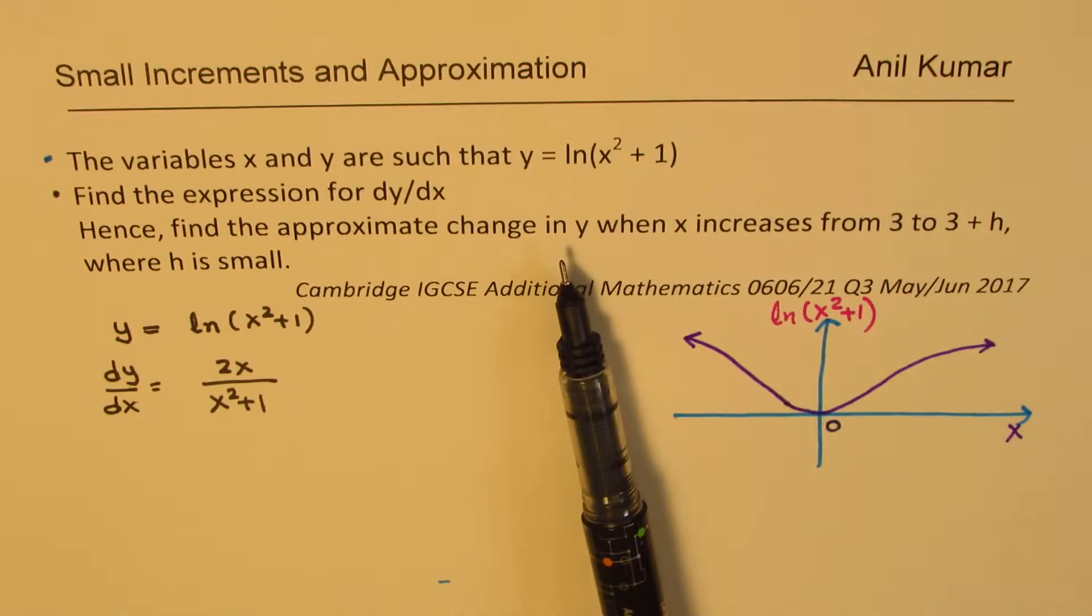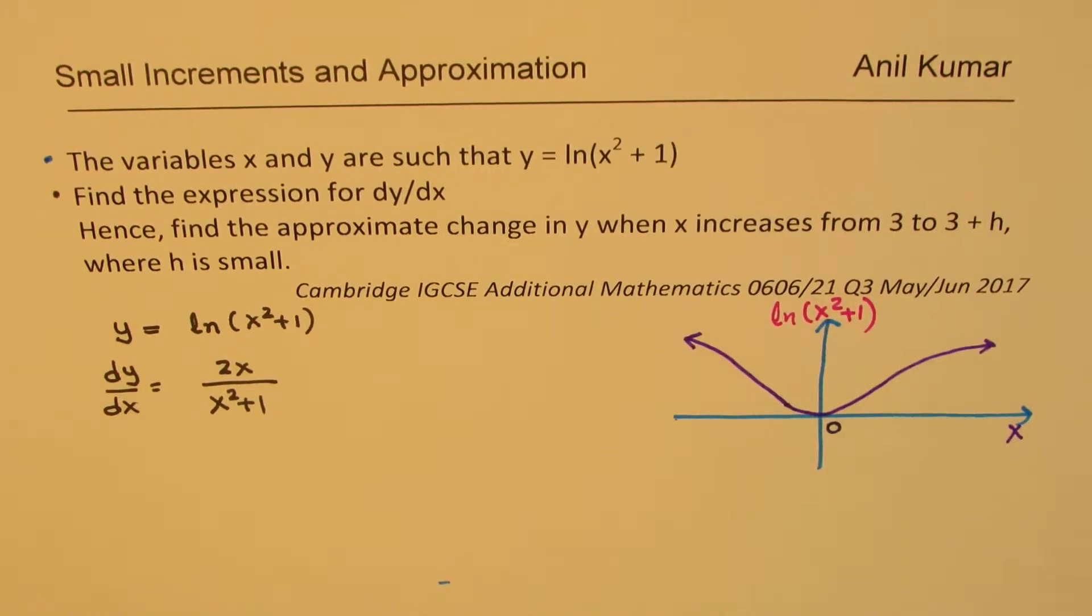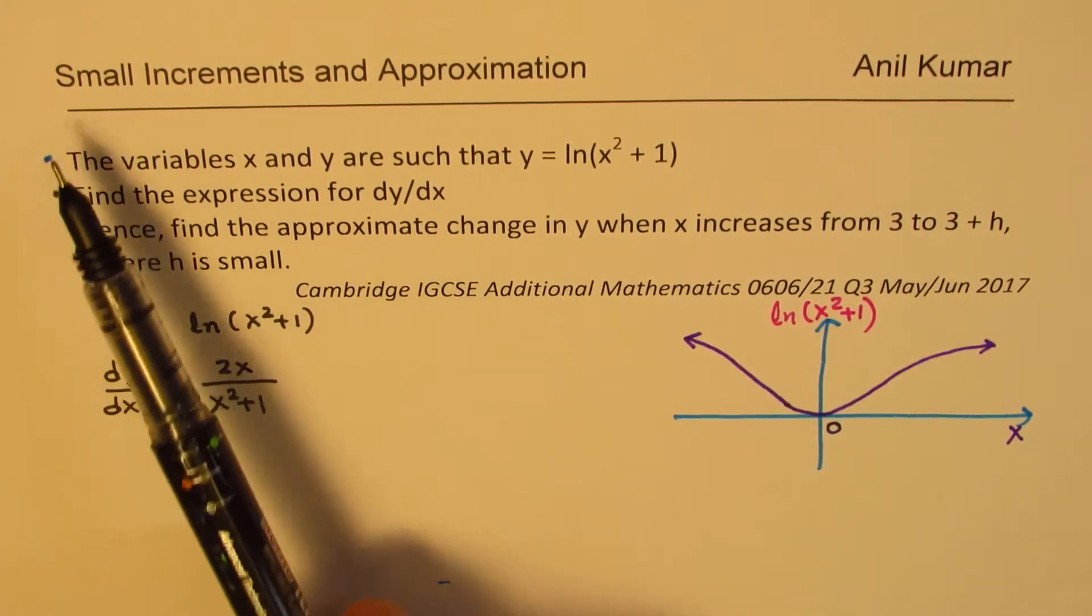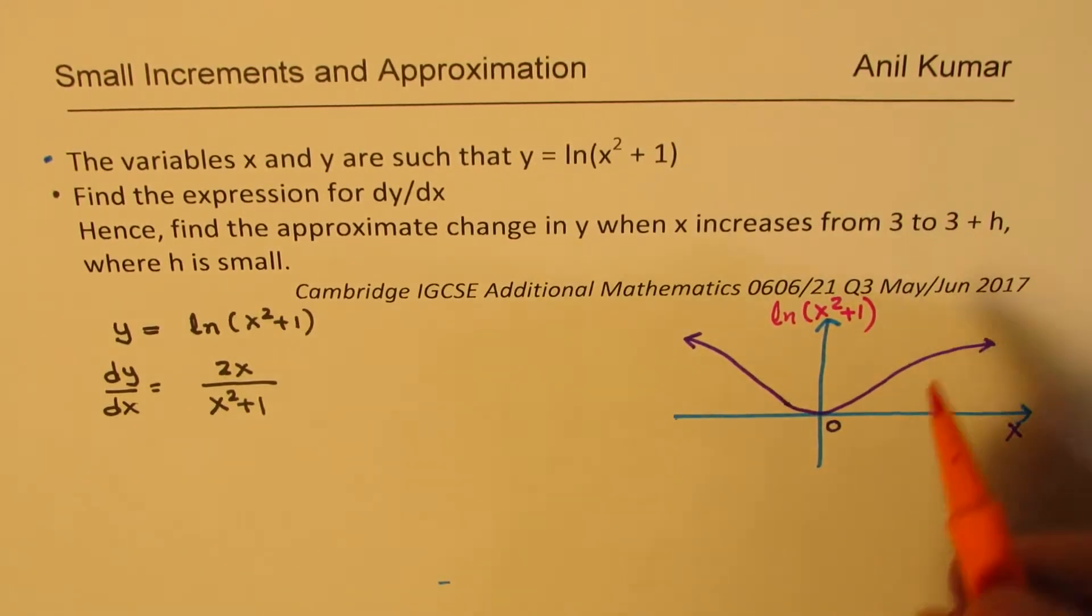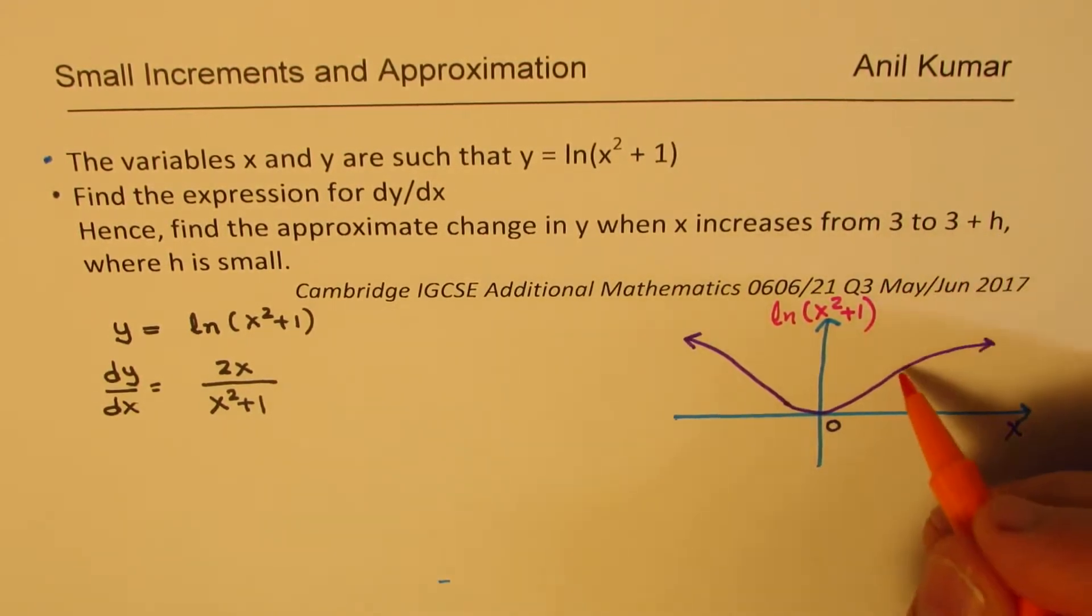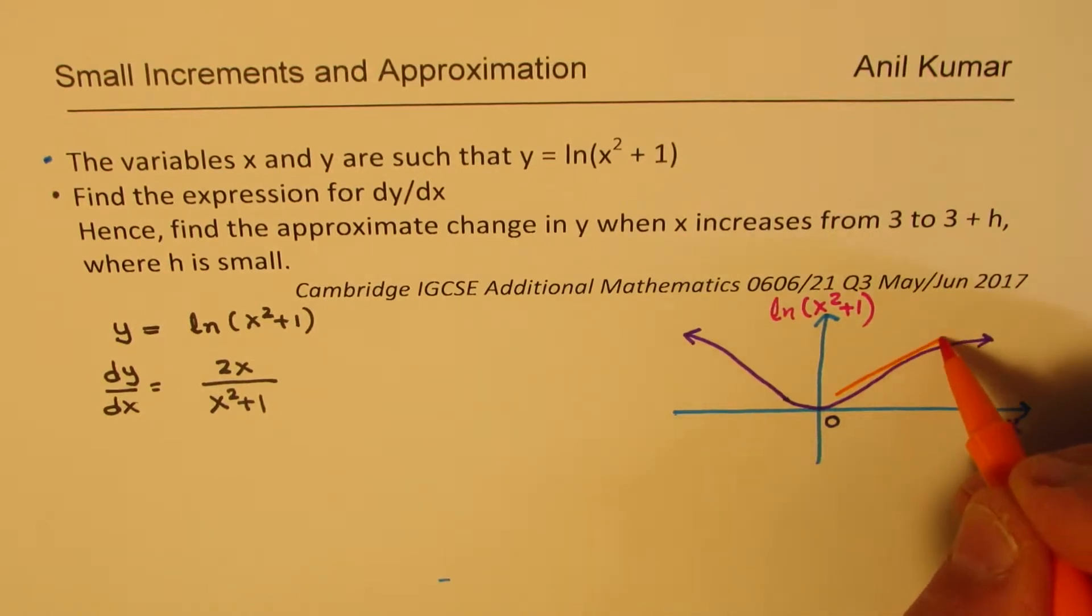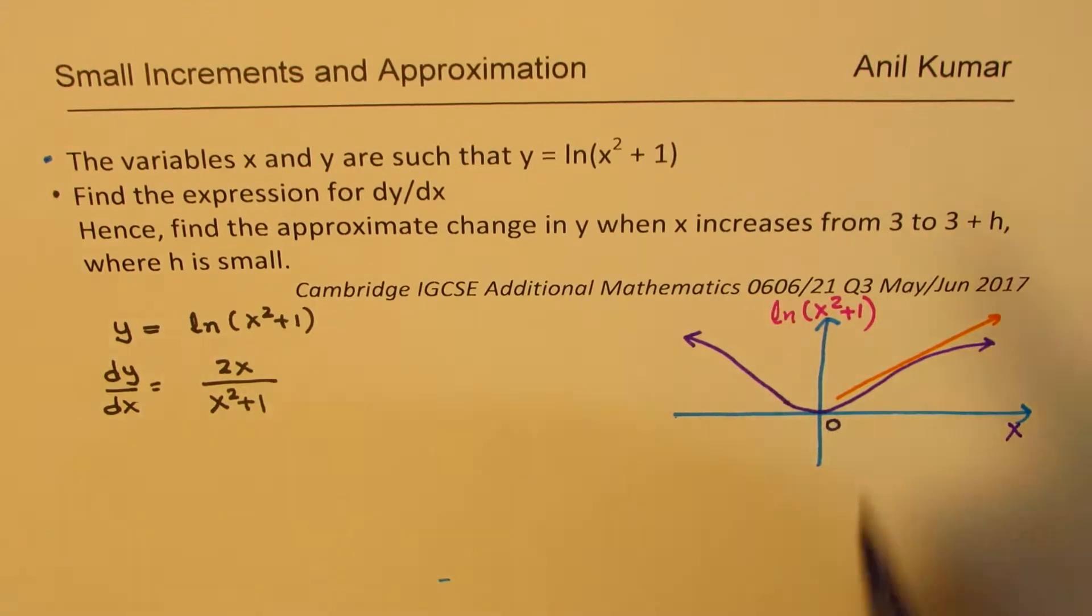Now the question is hence find the approximate change in y when x increases from 3 to 3 + h. We want to find the approximate change in y. What does that mean? That brings us to this unit on small increments and approximation. For some of you this may be a new concept, so I'll elaborate on this.